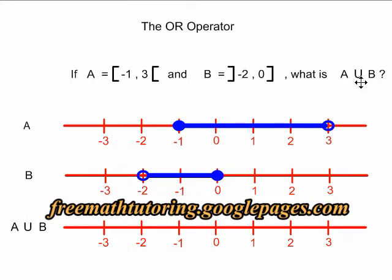When we do a union of A or B, any number that is in A or B is in the answer. For example, zero is in A and B, so it will be in the answer.